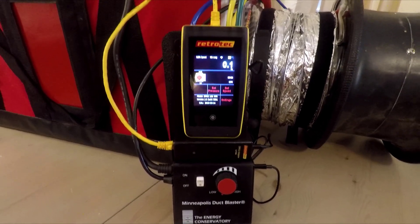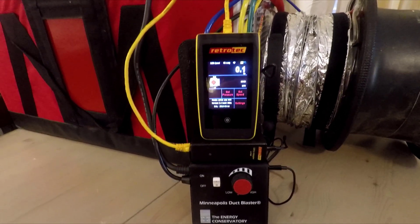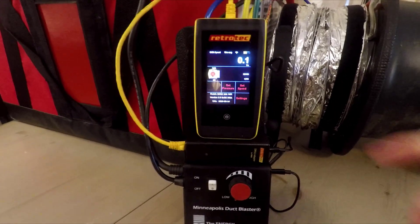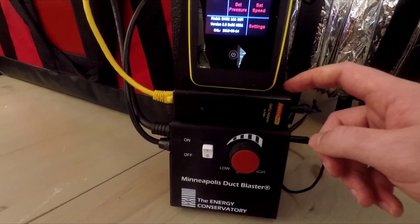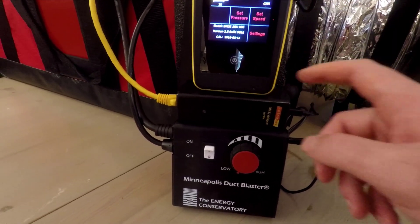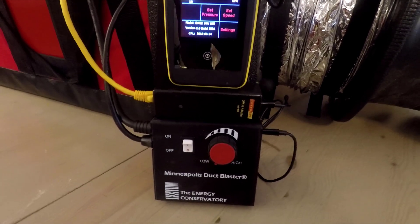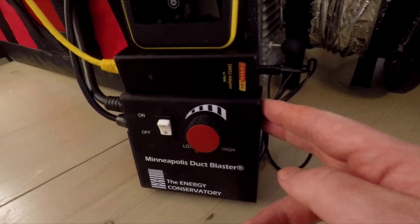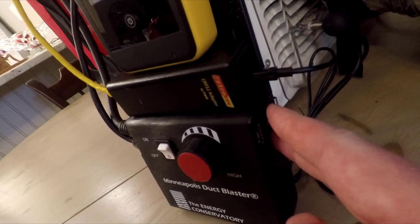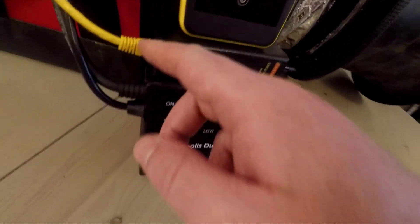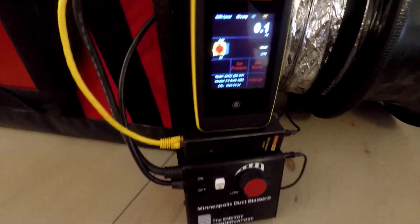To hook the gauge up to the speed control for your duct blaster, you need this adapter. And so if you wanted to trade your gauge in for one of these, this adapter will come with it. And basically what this does is it converts the stereo jack from your speed control here on the side to our ethernet cable that then plugs into the gauge.